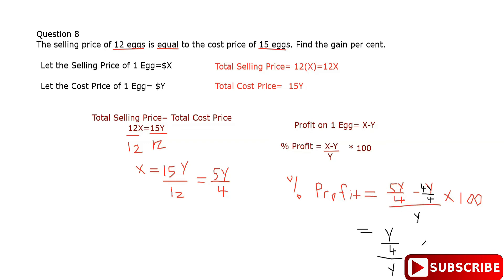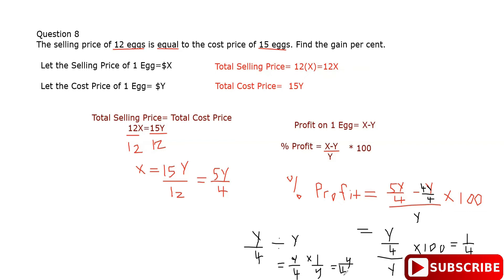So we have y over 4, divided by y, times 100. y over 4 divided by y equals y over 4 times 1 over y, and the y's cancel, giving one quarter. One quarter times 100 is 25.